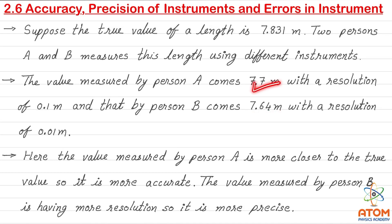Person A's value is more accurate but less precise; person B's value is more precise but less accurate. Obviously, in measurement we need both accuracy and precision — we cannot select just one. We need both for any measurement.